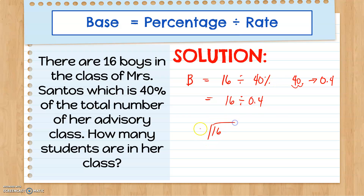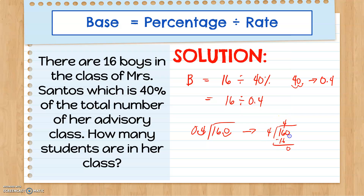Now we can divide 16 by 0.4. Our divisor is a decimal number, so we make it a whole number by moving the decimal point once to the right. Since we move once to the right in the divisor, we also move once to the right in our dividend. So we have 160 divided by 4. 16 divided by 4 is 4, 4 times 4 is 16, then 0 divided by 4 is 0. The quotient we got is 40.